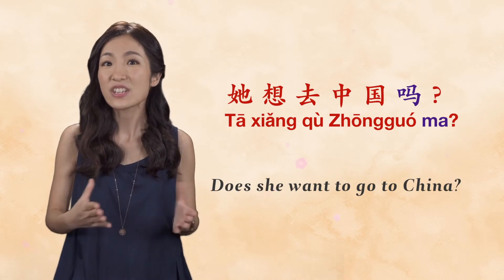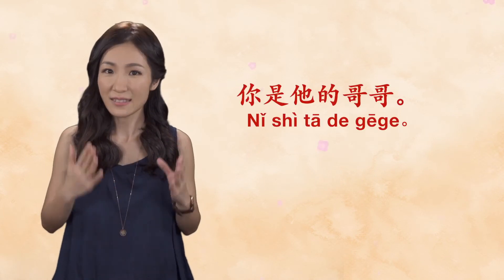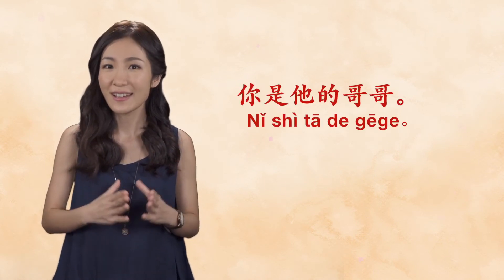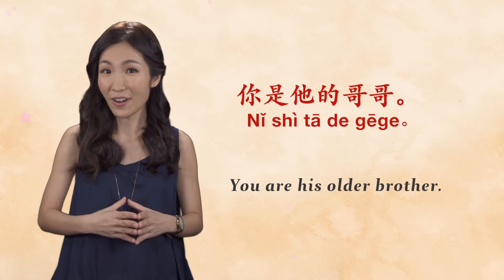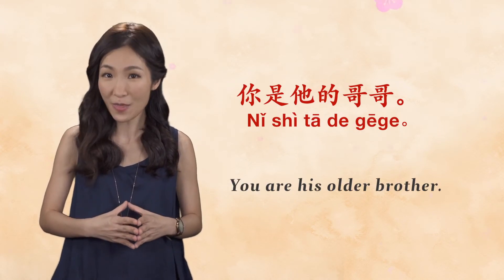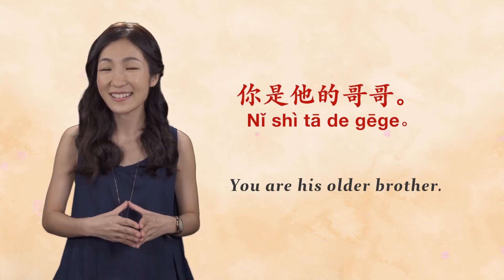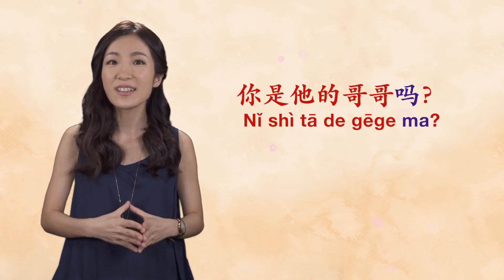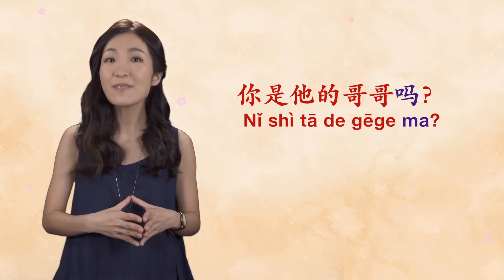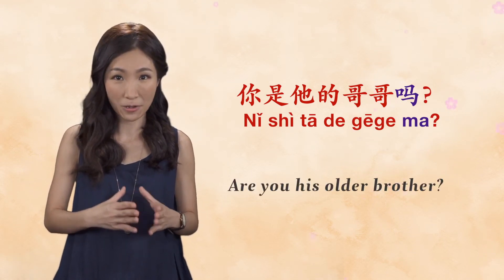Number three: 你是她的哥哥 — 'you are his older brother.' That's right. You should ask 你是她的哥哥吗? — 'Are you his older brother?'